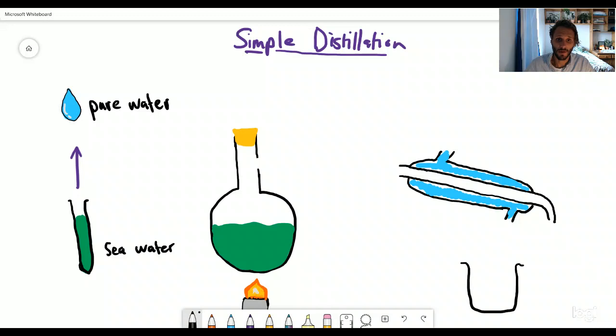Well, of course, we're trying to separate a mixture. This time we're trying to separate a liquid from a solution. And a classic example is here on the left hand side, we've got a solution of seawater and we can separate pure water from that.